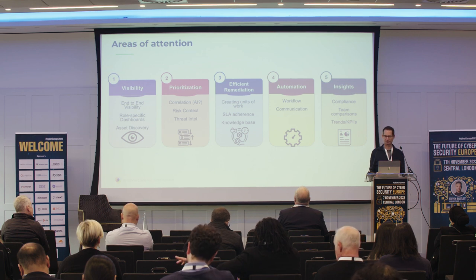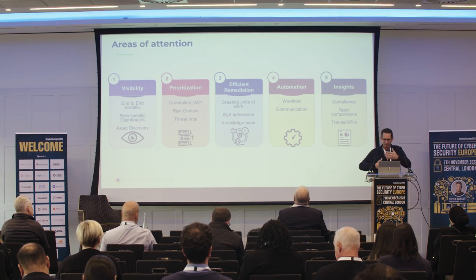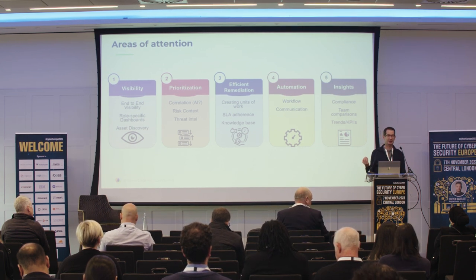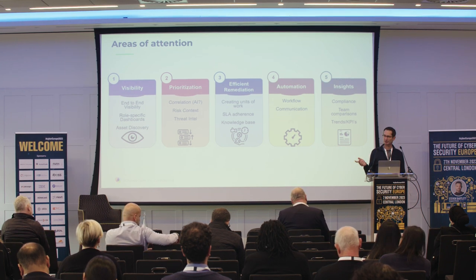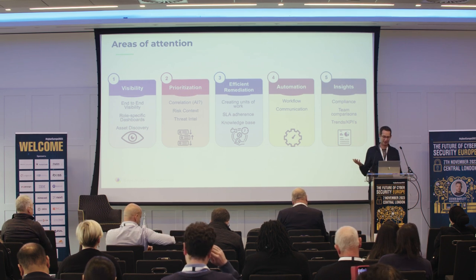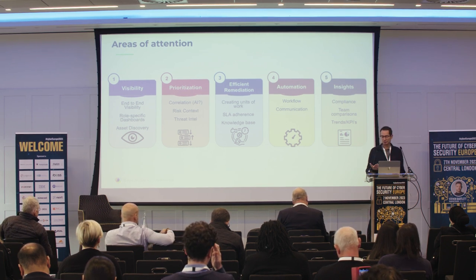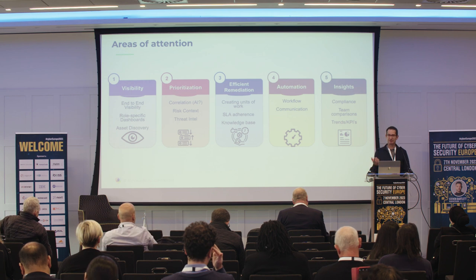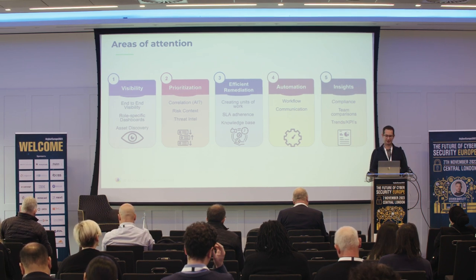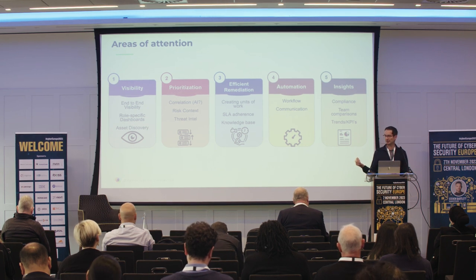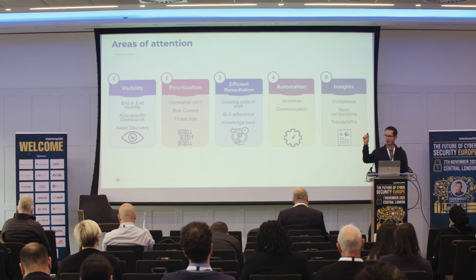Finally, once visibility, prioritization, remediation, and automation are in place, you can glean very interesting insights — key process indicators that show you're on the right track and demonstrate that the investment in people, process, and technology is delivering the return you expect. You can set standards and baselines and track whether you're meeting them.